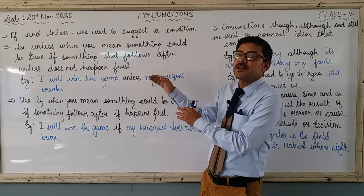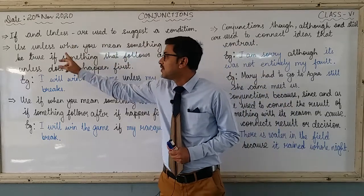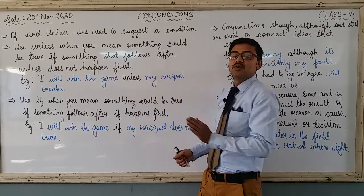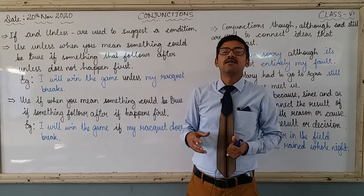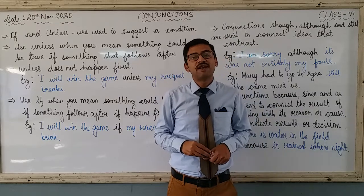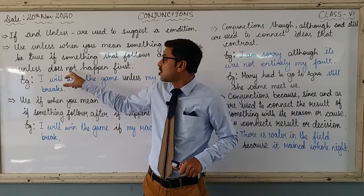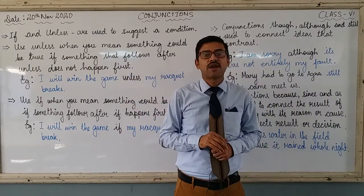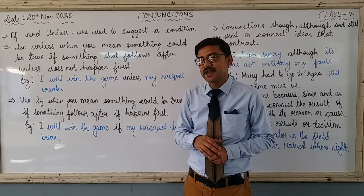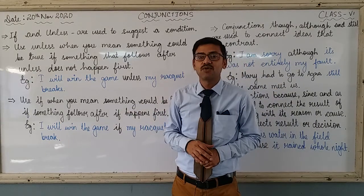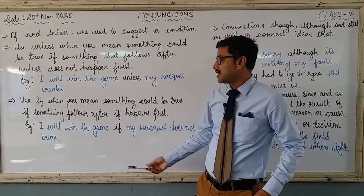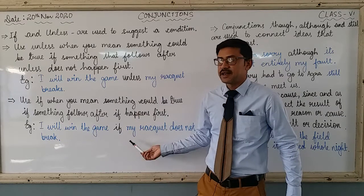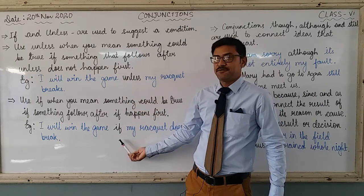We are trying to understand this by looking at the example first, then the explanation — otherwise it would be a little difficult to apply. We need to remember the example to use 'unless' correctly. Now the next example: 'I will win the game if my racket does not break.' Both sentences mean the same thing, but here 'unless' is used as the conjunction, and here 'if' is used.